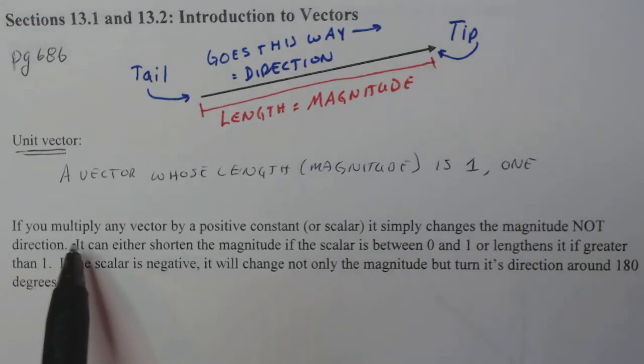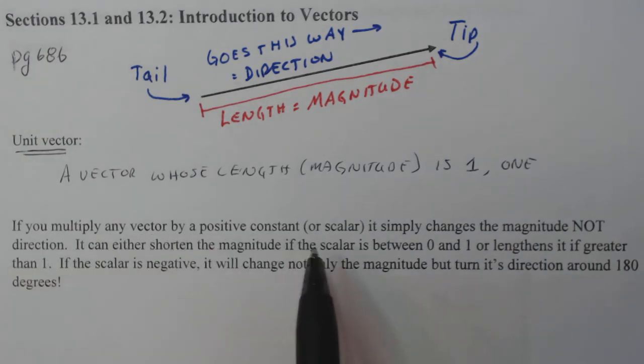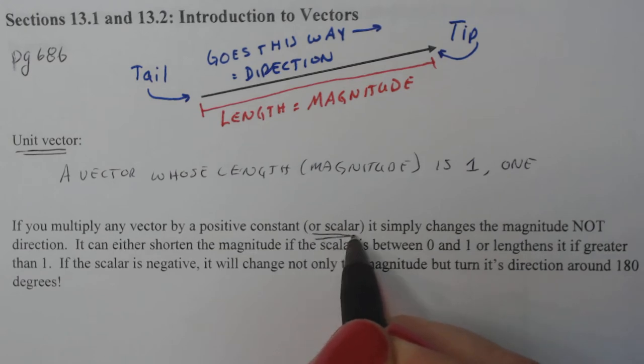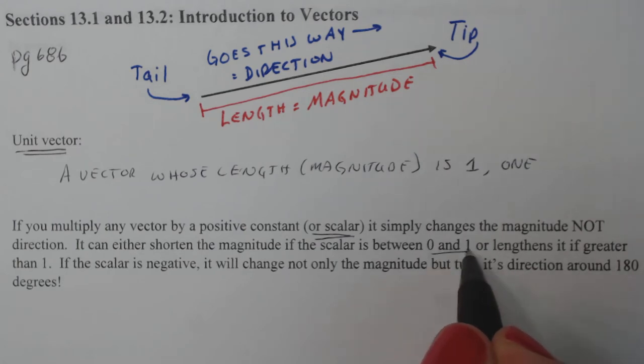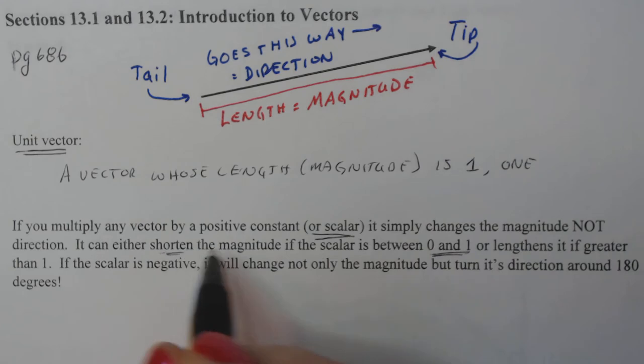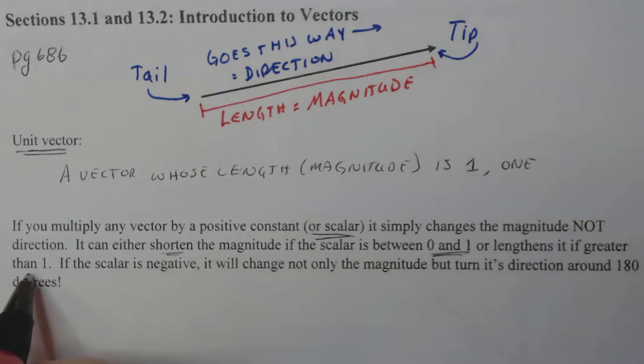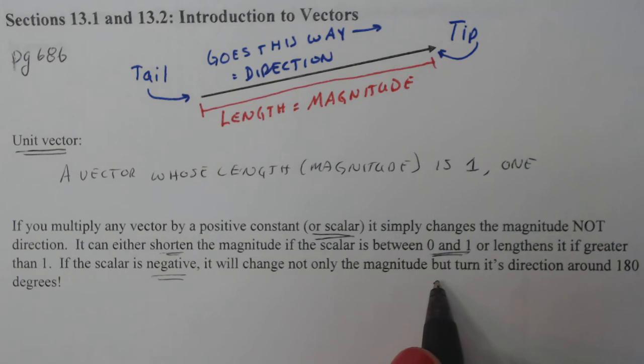Now this is important information. If you multiply any vector by positive constants, and we are now going to call that a scalar, it simply changes the magnitude, not the direction. It can either shorten the magnitude if the scalar is between zero and one, or lengthen if greater than one. If the scalar is negative, it will change not only the magnitude, but turn its direction around 180 degrees.